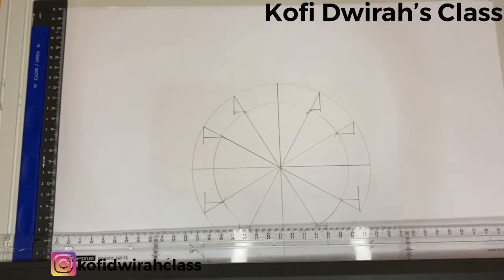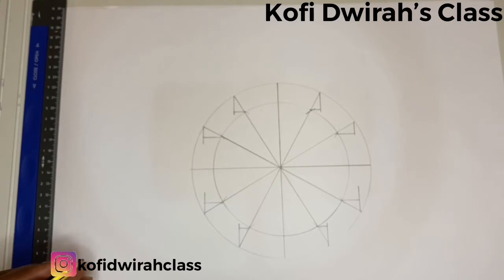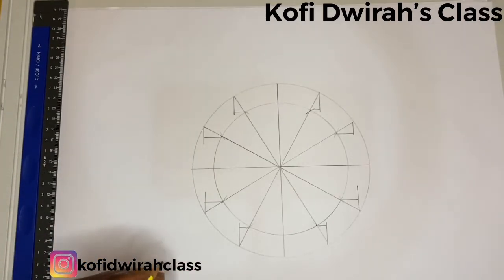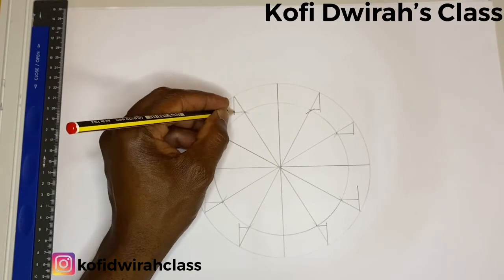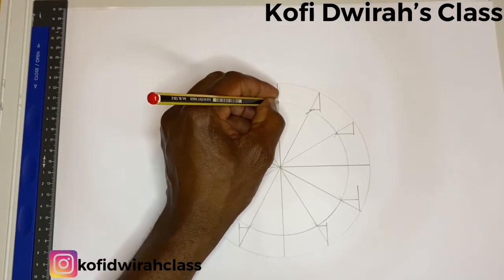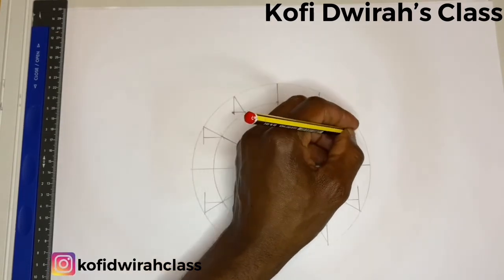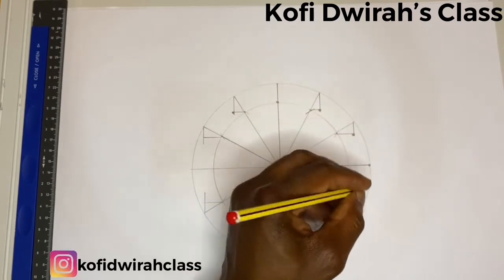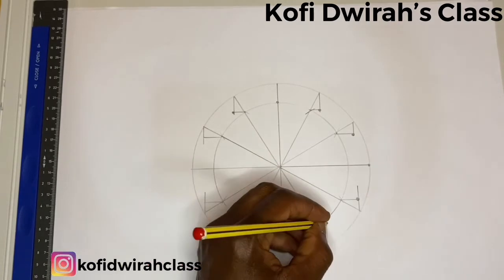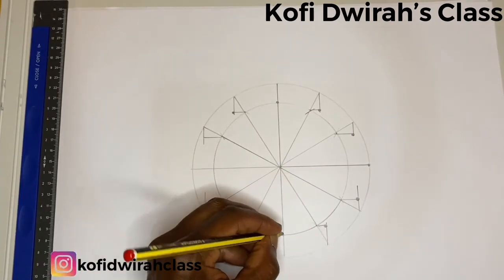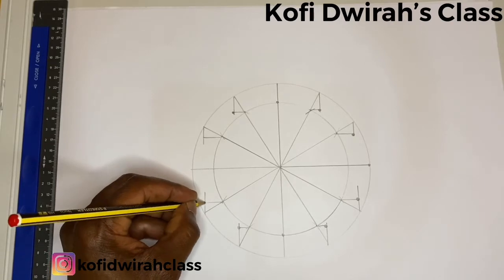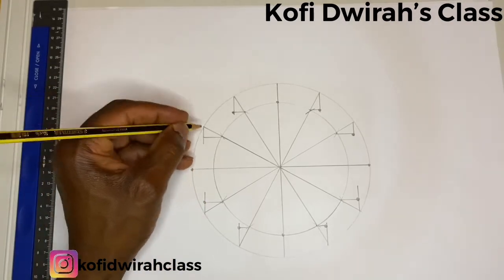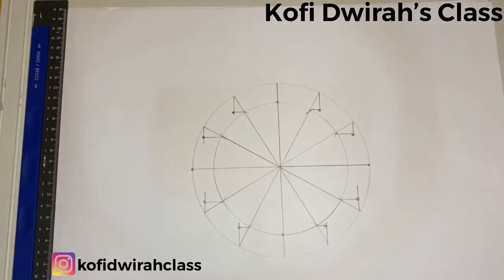So our ellipse is going to be drawn through these points. We are going to draw the ellipse through these points — it's going to pass here, here, here, here, here, here. Through these points, these points, these points, these points.